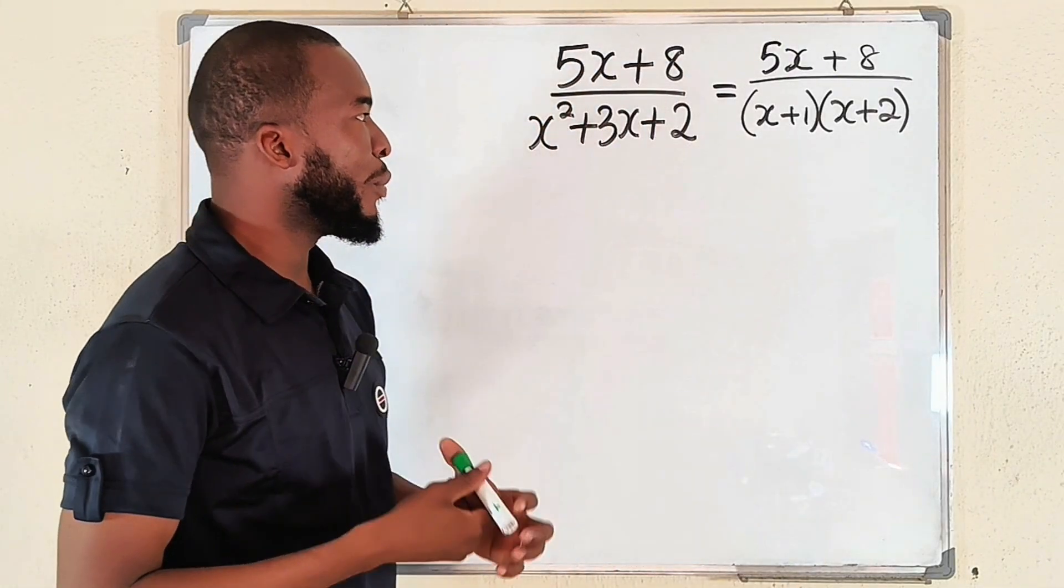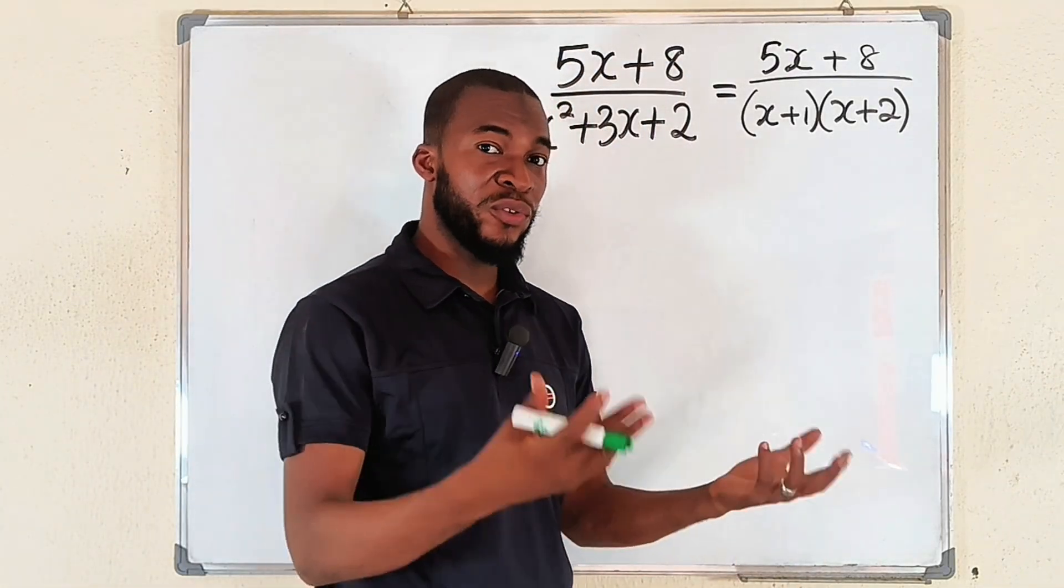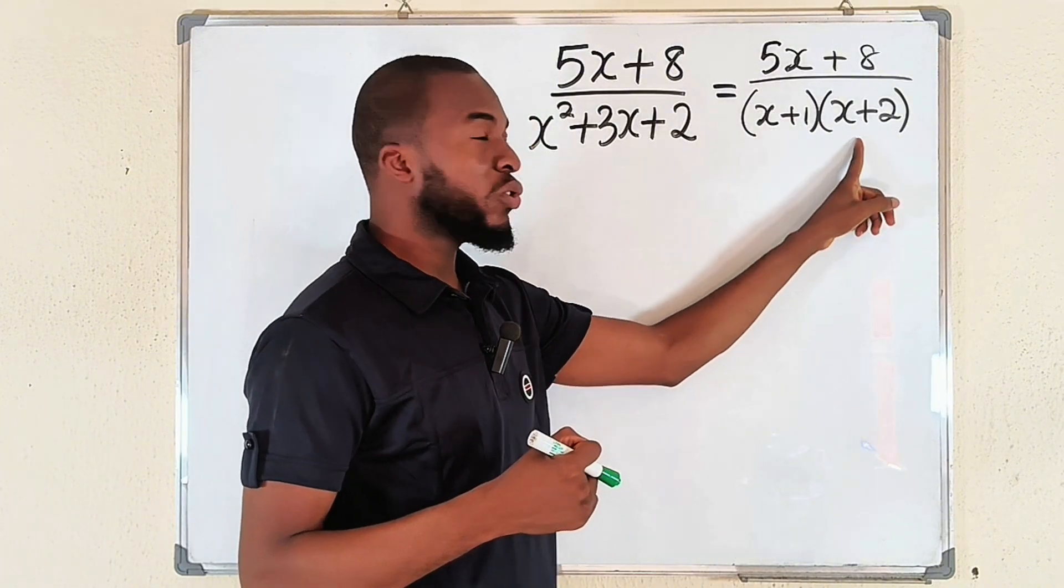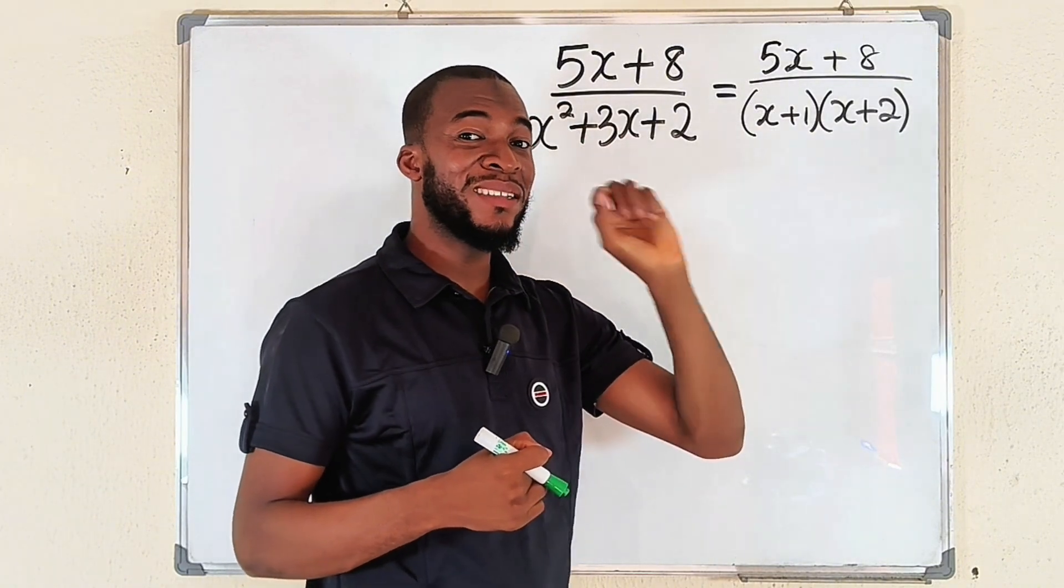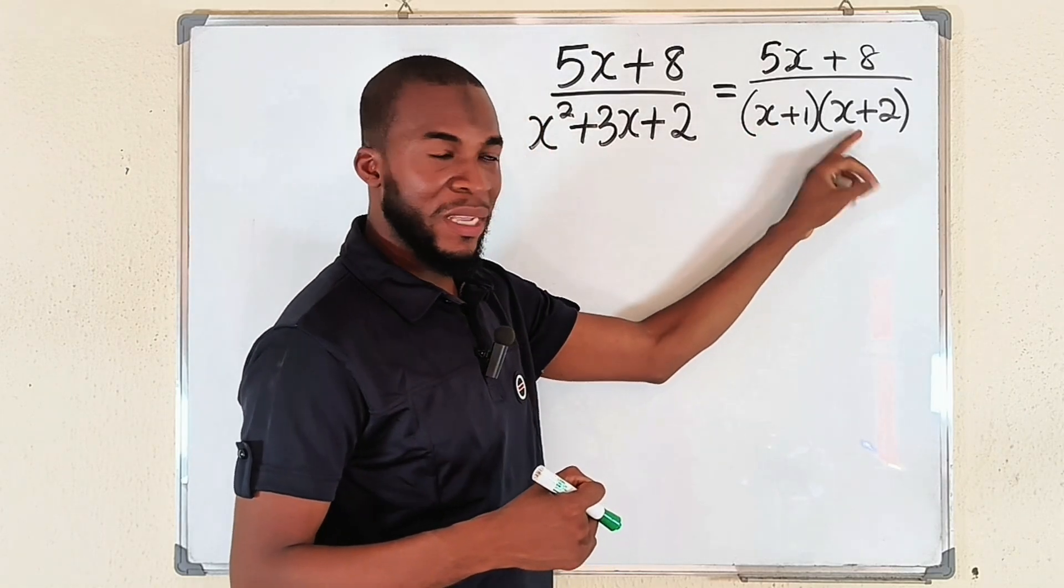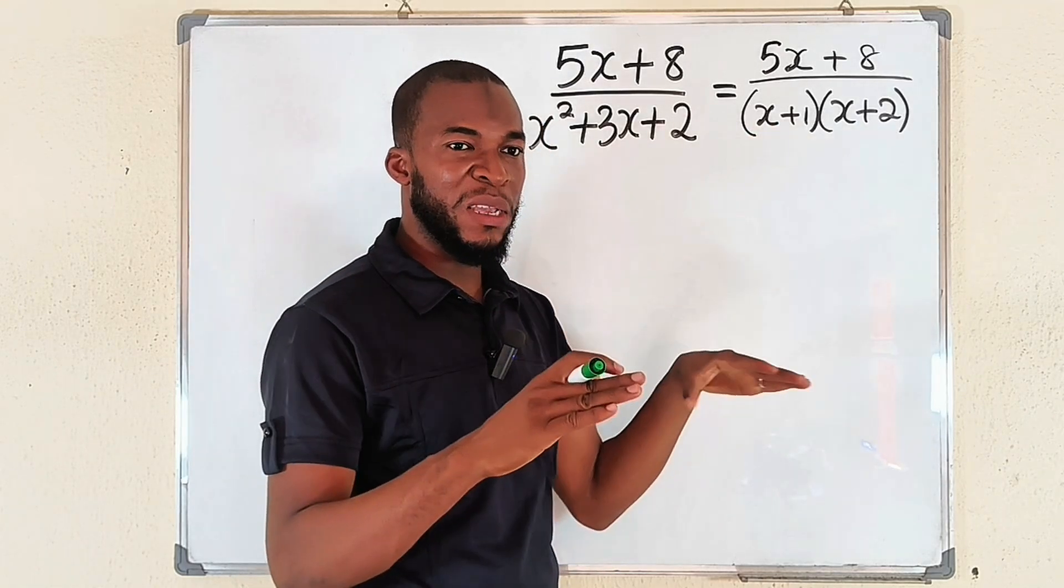Use cover-up method when you have a product of two distinct linear factors. You can see these are factors, right? They are linear and distinct, meaning they are entirely different.